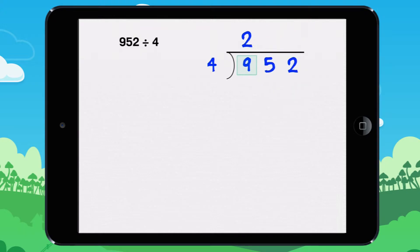It goes in 2 times, because 2 times 4 equals 8. 2 times 4 equals 8.